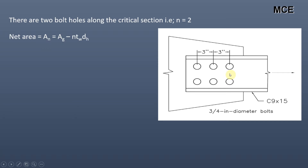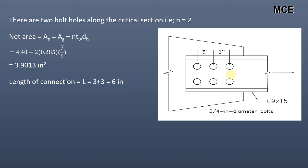The net area is calculated as gross area minus the number of bolt holes multiplied by the web thickness multiplied by the bolt hole diameter. Substituting values, the net area of the section equals 3.9013 in².